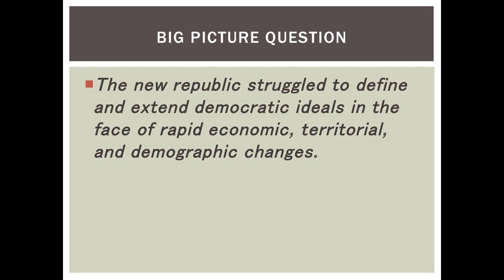We have a brand new big picture question for period four. It says: the new republic struggled to define and extend democratic ideals in the face of rapid economic, territorial, and demographic changes. The economy will be growing — we'll talk about the market revolution. America is going to extend its territory, getting more and more land. The demographics will change: the people, where they live, the type of immigrants coming to America.